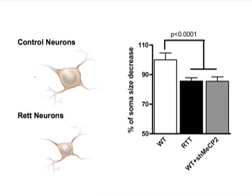To confirm that this phenotype was caused by MECP2 loss of function, we knocked down MECP2 in control neurons and observed a similar decrease in cell soma size.